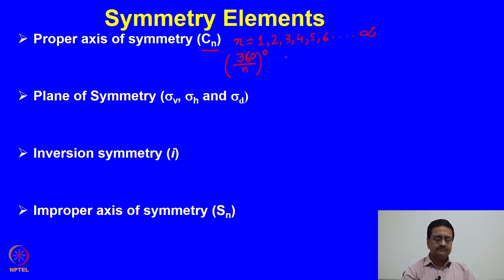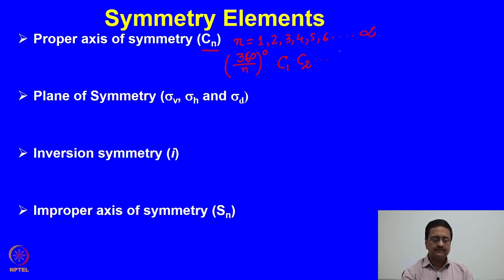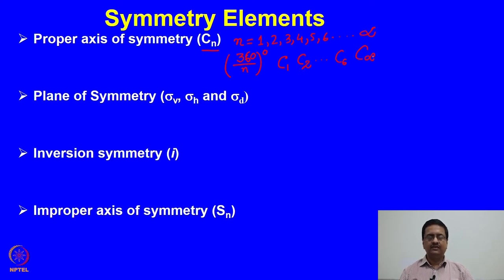When you have C1, it means you only get back the same molecule when you rotate by 360 degrees. C2 means the same molecule is regenerated when rotated by 180 degrees about that axis. C6 means 60-degree rotation brings the molecule back to the same orientation. And C∞ means that if you rotate the molecule by an infinitesimally small amount, the molecule does not change its orientation. That is why Cn, the proper axis of symmetry, is the first element to look for.